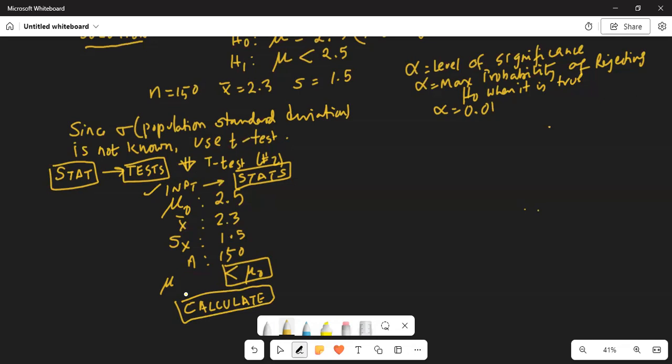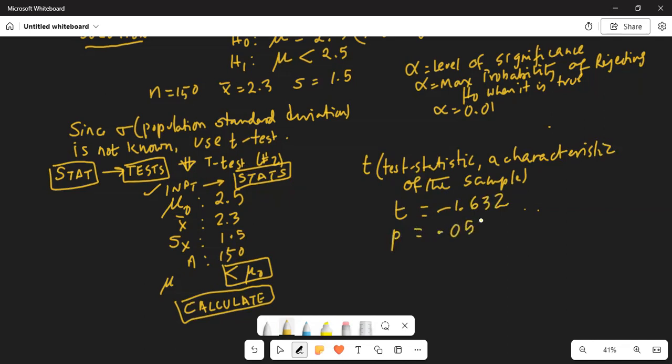So, we will calculate a test statistic. T is our test statistic. T is a characteristic of the sample, a characteristic of the sample that we have collected. And T works out to be minus 1.632. And look at the p-value, just below it. It is 0.0522.